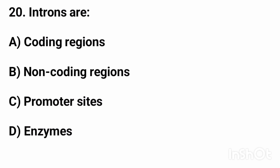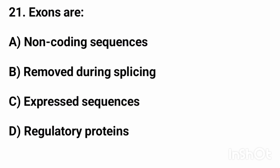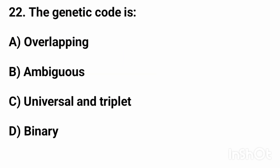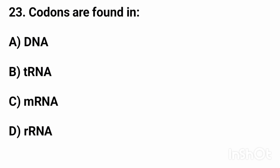Question number twenty: introns are? The right answer is option B, non-coding regions. Question number twenty-one: exons are? The right answer is option C, expressed sequences. Question number twenty-two: the genetic code is? The right answer is option C, universal and triplet. Question number twenty-three: codons are found in? The right answer is option C, mRNA.